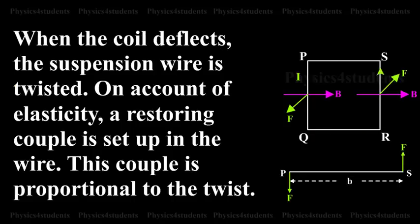When the coil deflects, the suspension wire is twisted. On account of elasticity, a restoring couple is set up in the wire. This couple is proportional to the twist.